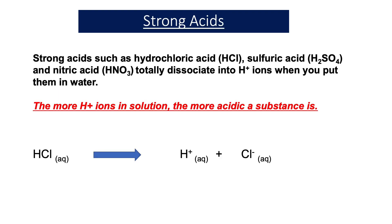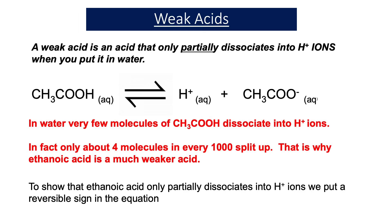In previous video lessons we've learned that strong acids such as hydrochloric acid, sulfuric acid, and nitric acid totally dissociate into H⁺ ions when you put them in water, and the more H⁺ ions in solution the more acidic a substance is. Here we have hydrochloric acid totally splitting up into H⁺ ions and Cl⁻ ions. In contrast, weak acids such as ethanoic acid only partially dissociate into H⁺ ions when you put them in water.